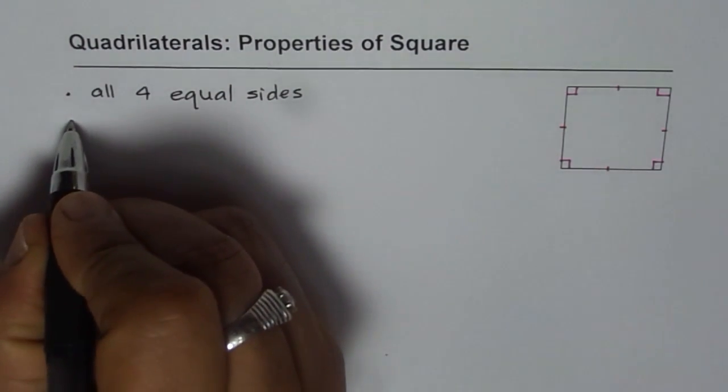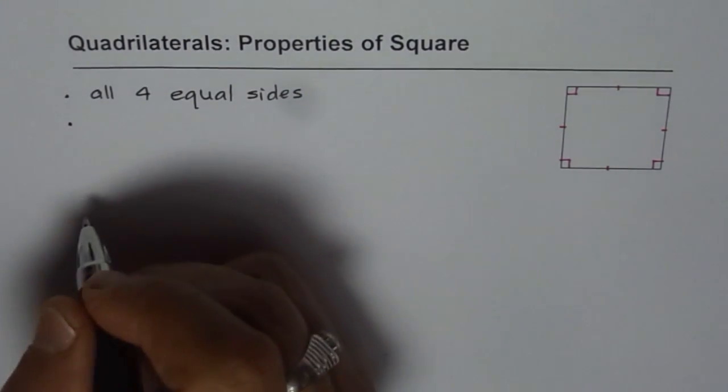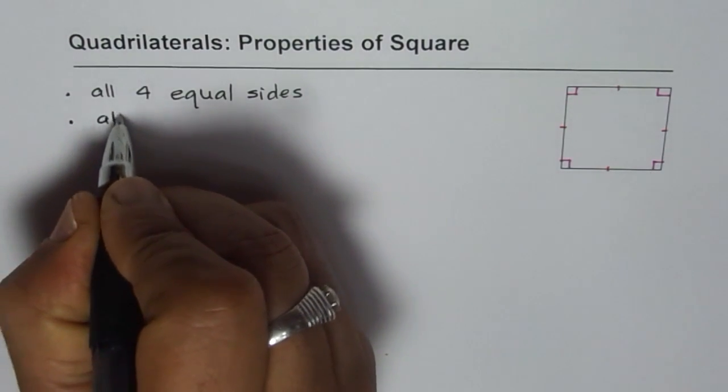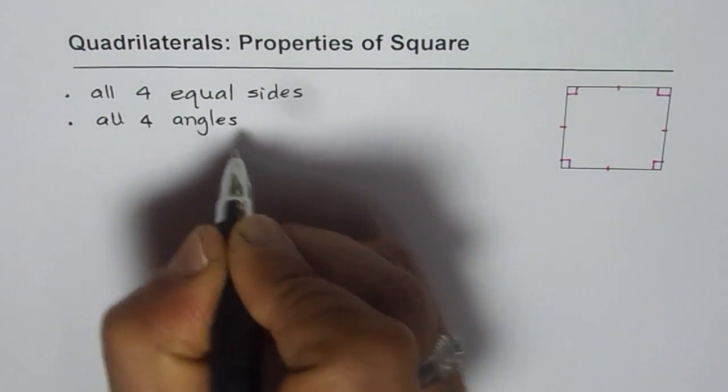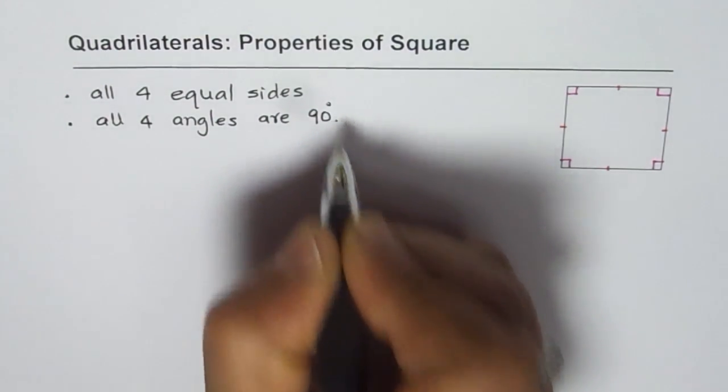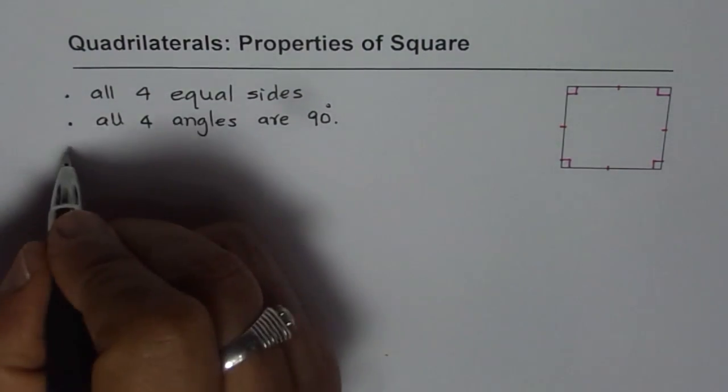Now in a square since all four sides are equal the interior angles, the interior angles of the square are 90 degrees. So all four angles are 90 degrees each. Now of course they will add.